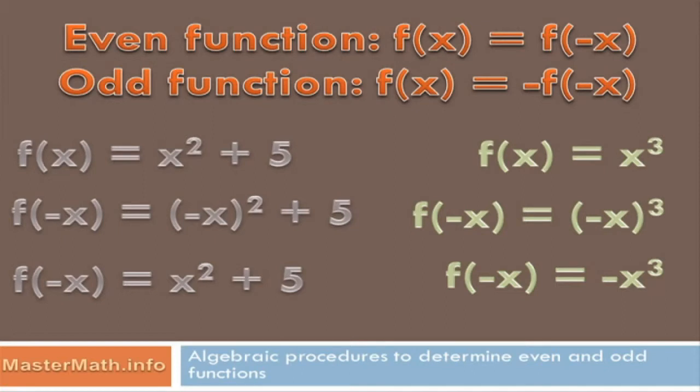We call that an even function, and the exponent is even. If I have an even numbered exponent, even with a negative number, that variable will end up being positive.